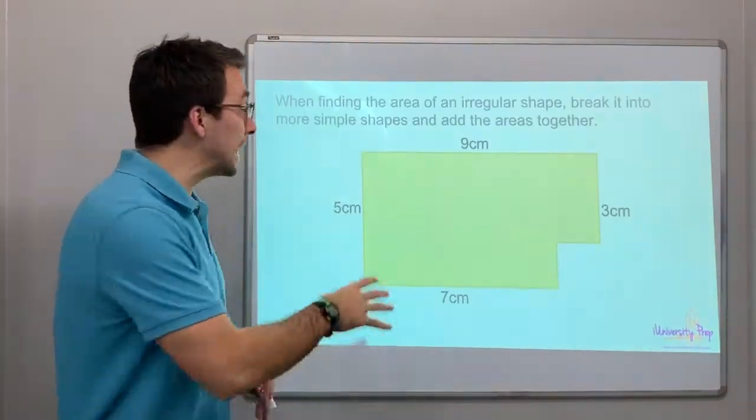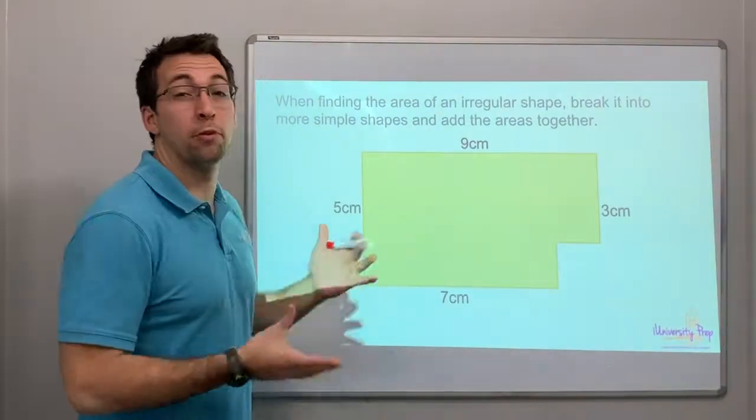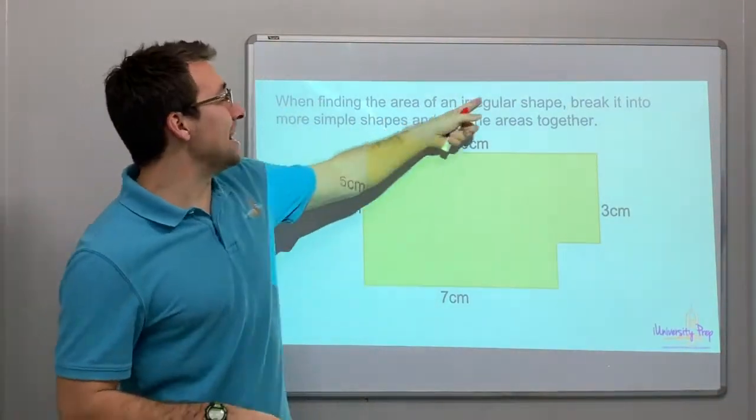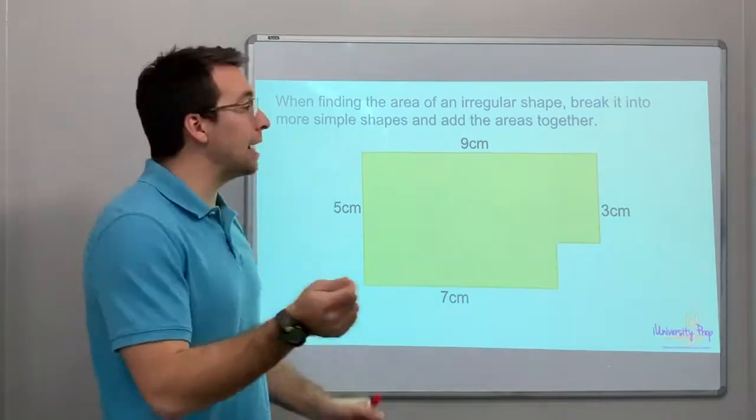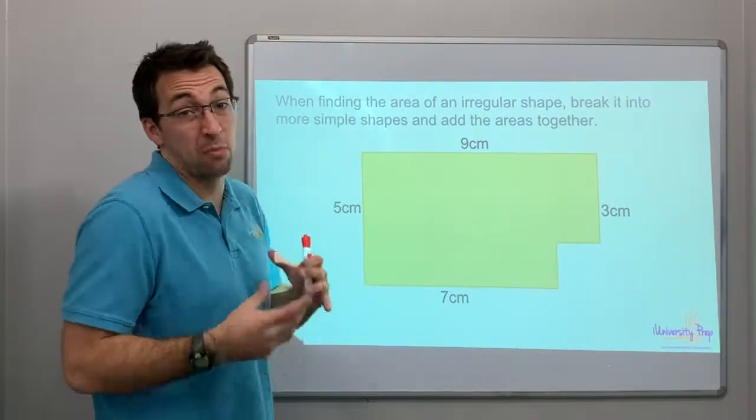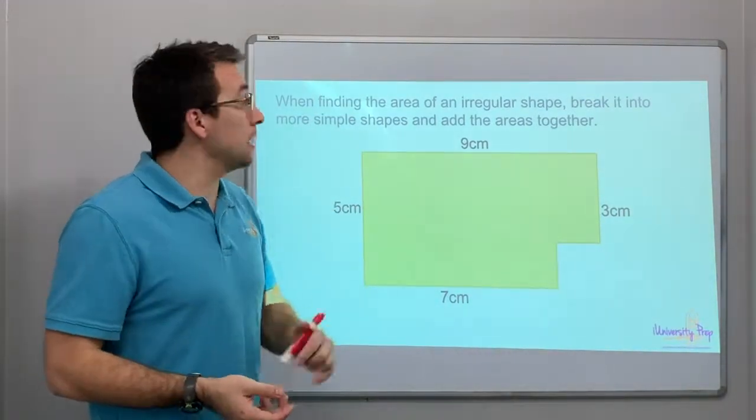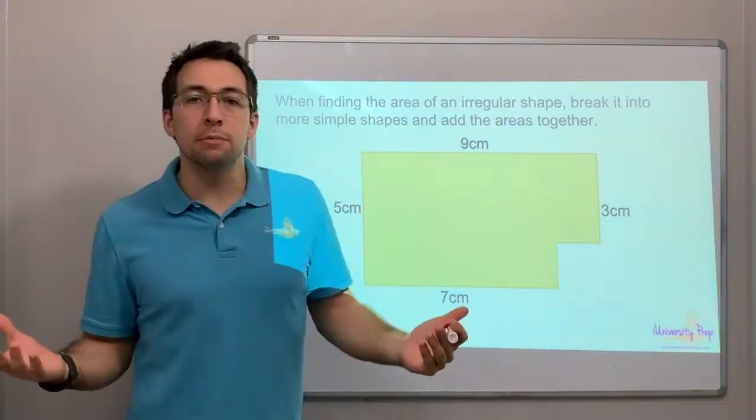Because we are going to look at shapes like this, we're going to break them into multiple shapes. So when finding the area of an irregular shape, break it into simple shapes and then add the areas of those shapes together.